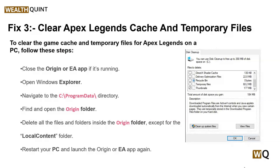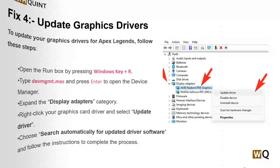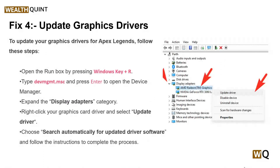First, close the Origin or EA app. Then open Windows Explorer and navigate to the C drive, Program Files, and ProgramData. Find and open the Origin folder, then delete all files and folders inside it. After that, restart your PC and launch the Origin or EA app again.